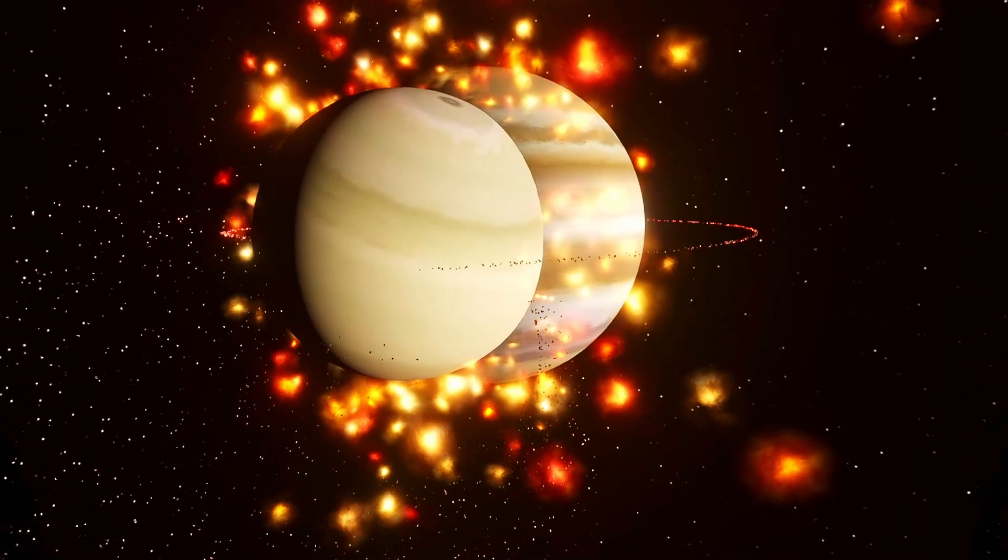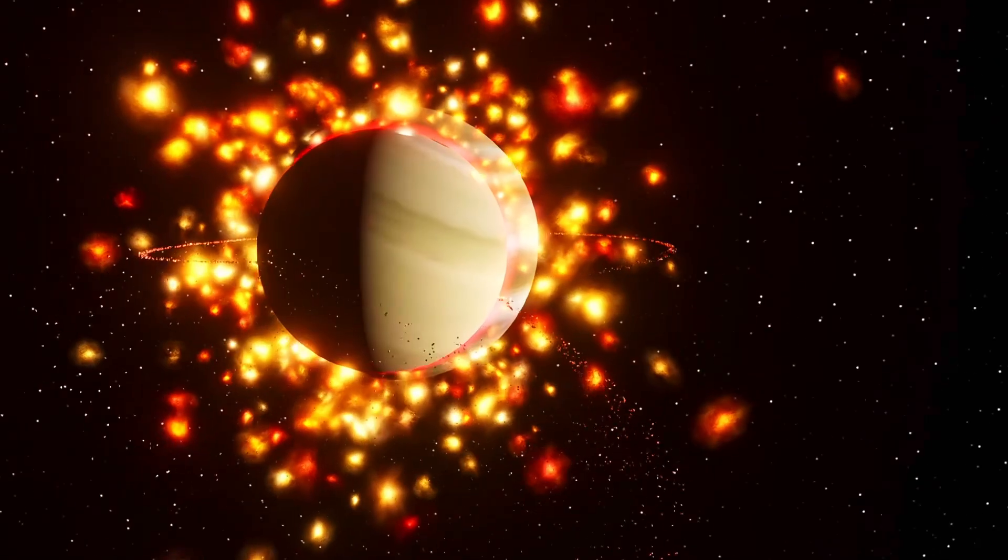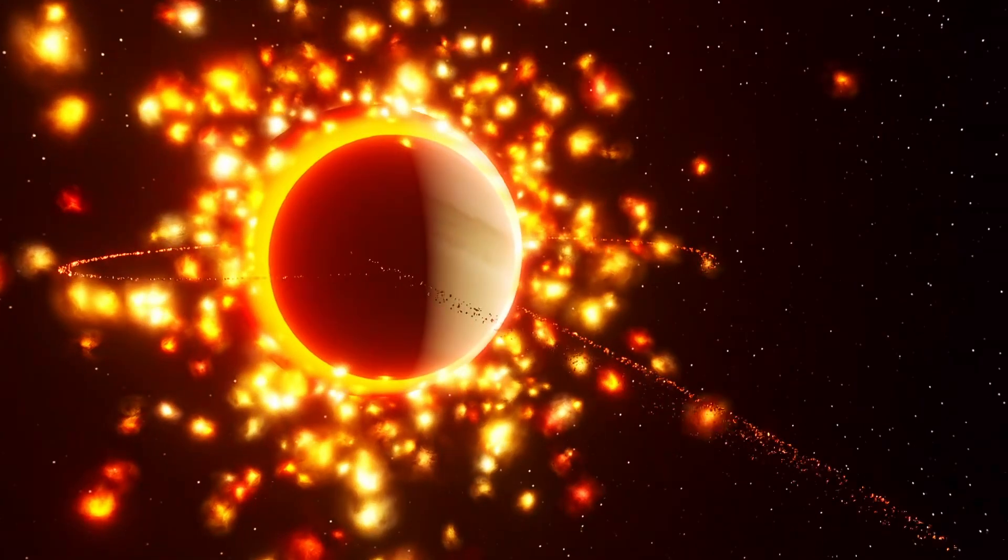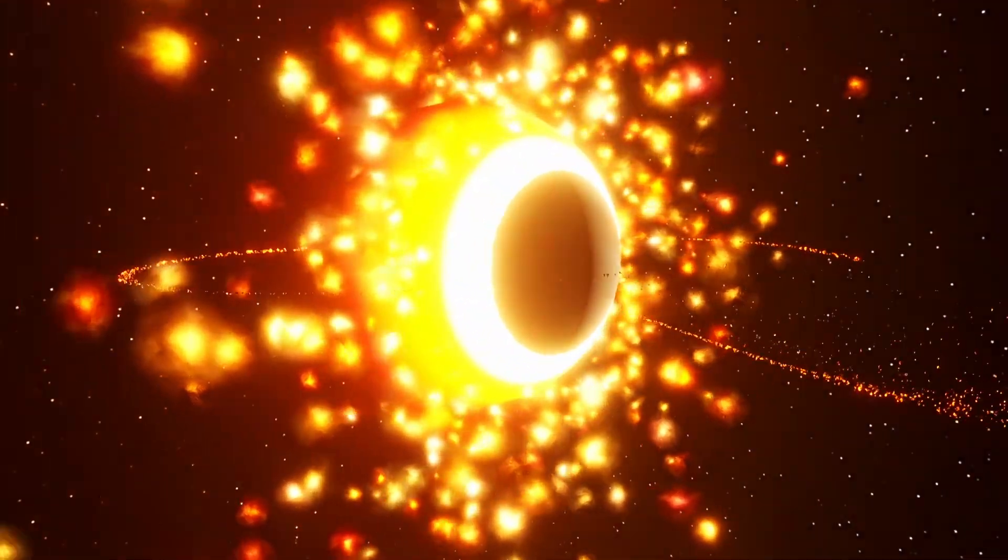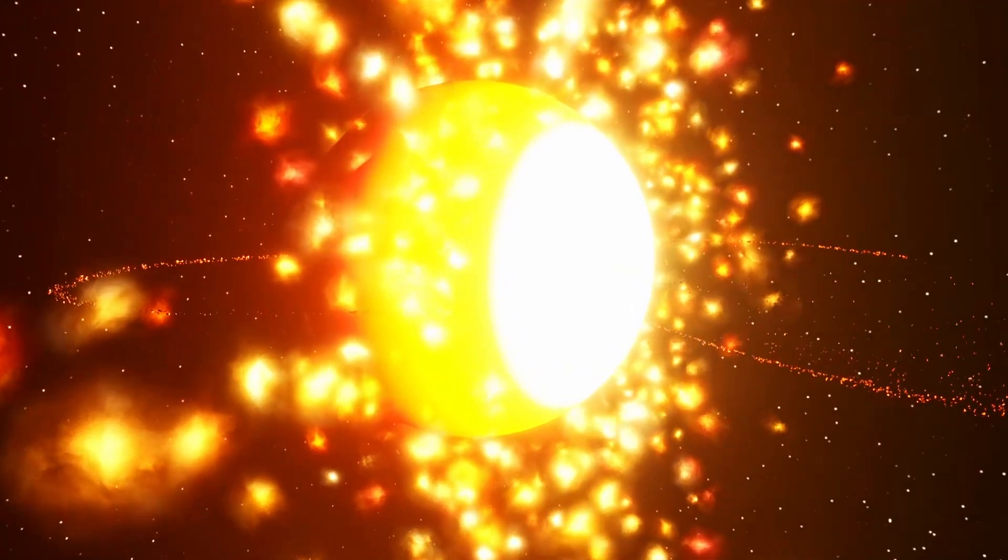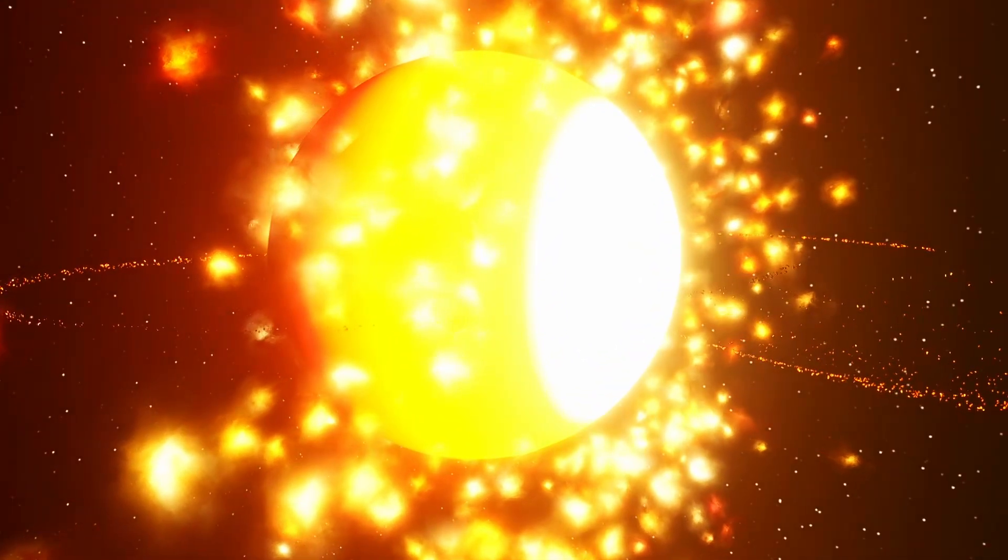Jupiter, being more massive, would absorb Saturn. The result? A supercharged Jupiter, even bigger, with new rings formed from the broken pieces of Saturn's original rings.